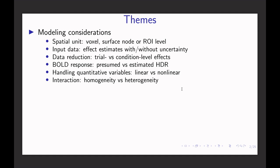Next, brain response. The typical approach assumes a fixed shape for the hemodynamic response — one fixed curve applied to all brain regions, all conditions, all subjects. If we want a more accurate approach, that would be to estimate the hemodynamic response, which means we end up with multiple betas per condition. That would be a challenge at the population level.